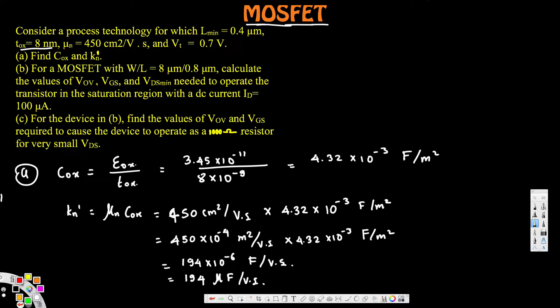Now let's move to part (b). For a MOSFET with W/L = 8 μm / 0.8 μm, we need to calculate V_OV (overdrive voltage), V_GS (gate-source voltage), and V_DS minimum needed to operate the transistor in the saturation region with a DC drain current I_D = 100 μA.